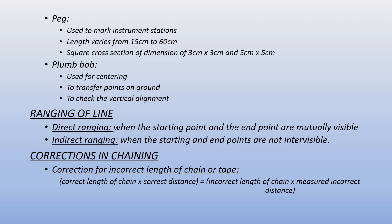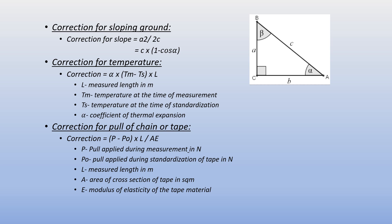There are corrections in chaining. The correction for incorrect length of chain: correct length of chain multiplied by correct distance equals incorrect length of chain multiplied by measured distance. The correction for sloping ground equals h²/2L, or L(1 − cos α). The correction for temperature is equal to L × α × (Tm − Ts), where L is measured length in meters, Tm is time of measurement temperature, Ts is the temperature at which the chain is standardized, and α is the coefficient of thermal expansion.